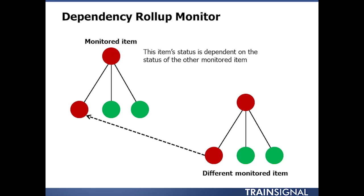Next up, we have dependency monitors. These allow Operations Manager to view the health of one object and have it affect the health of another object — it might be completely unrelated to that object. These are similar to aggregate roll-up monitors,